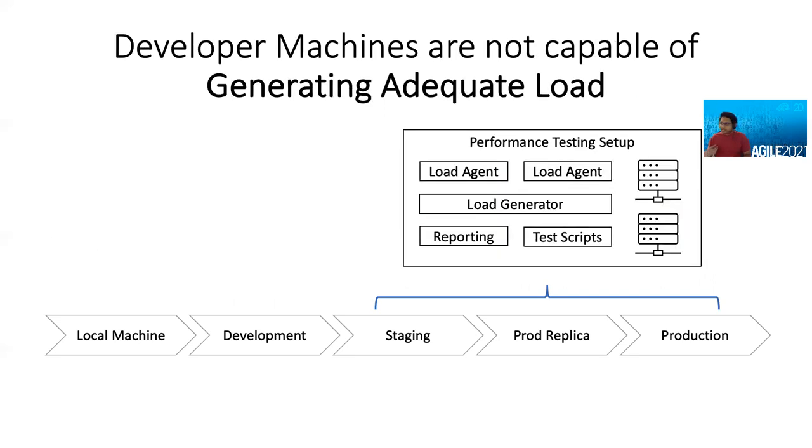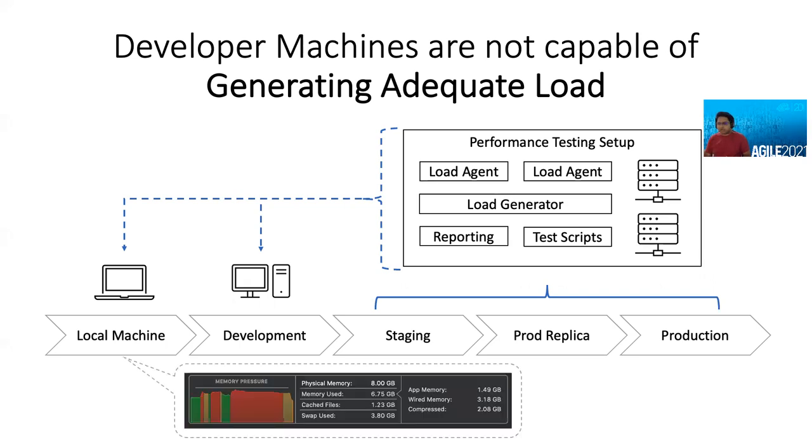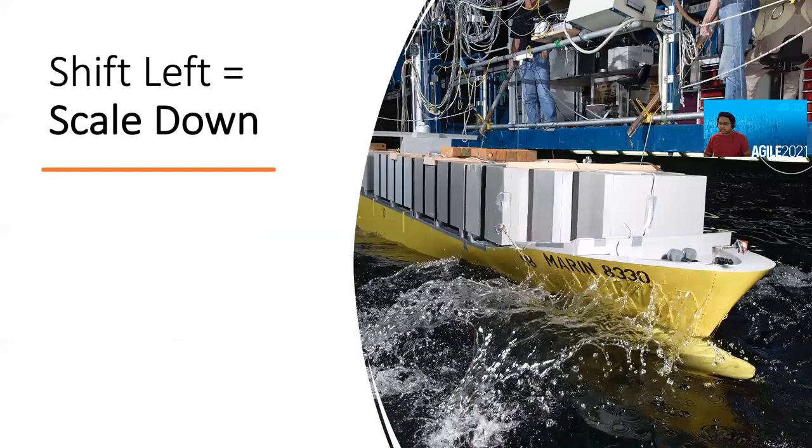And moreover, perf test environments themselves are fairly complicated with multiple servers to generate significant load. Now trying to stuff that into a higher environment itself is pretty hard. And now putting it on my local machine, this is a screenshot of how it looks as the memory pressure on my 8GB MacBook Pro. That's not desirable, is it? And now all of these issues are fairly genuine. So with all these challenges, how do we shift left?